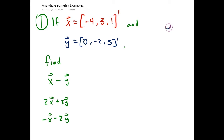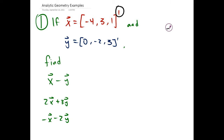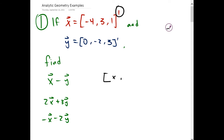For our first example, we have x equals the vector (-4, 3, 1) and this symbol here means it's being transposed. Transposed is a fancy word meaning we're going to make this a column vector — that's what we're used to dealing with. So if we have a vector like this, it means it's a column.